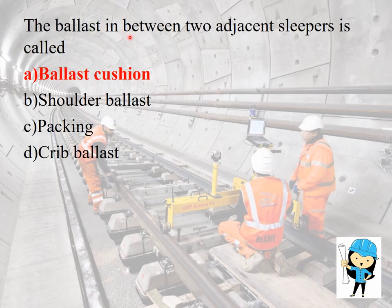The ballast in between the two adjacent sleepers is called the ballast cushion. It is used to bear the load from the rail road ties, to facilitate the drainage of water, and also to keep down vegetation.